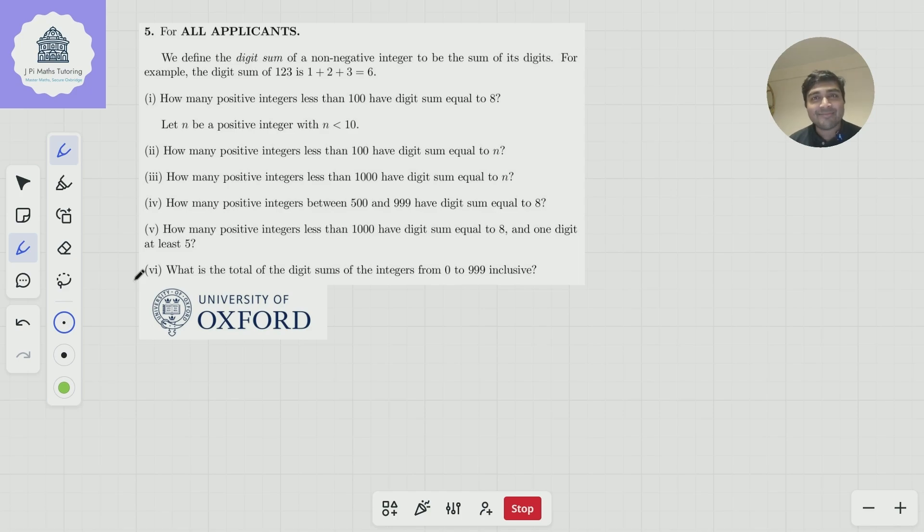Today I've got a problem from the Oxford University Mathematics Admissions Test. This comes from 2013, and this is problem 5, which consists of 6 smaller parts. We define the digit sum of a non-negative integer to be the sum of its digits. For example, the digit sum of 123 is 1 plus 2 plus 3, which is 6. So you're just adding up the digits.